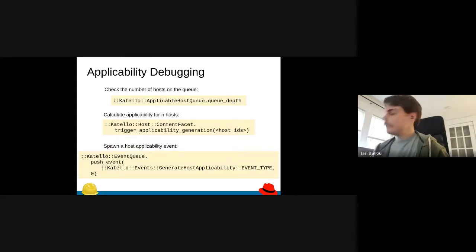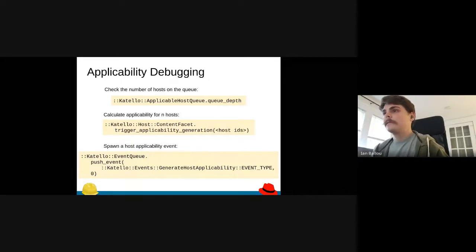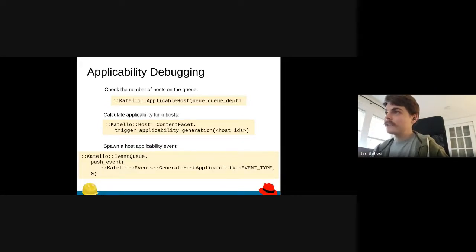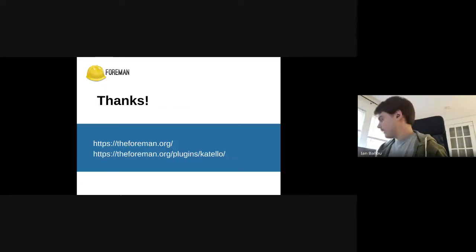Then I just have some debugging info that may be helpful. If you ever want to check the number of hosts on your queue, if you were questioning if they were being processed correctly, you could run this queue depth command from the console. You can also generate applicability for any number of hosts that you want by using this trigger applicability generation method with all your host IDs in the console. That will push it onto the queue and make the generate applicability event for you. If you also just need to try spawning like an applicability event by itself, this was helpful in the past when we were trying to figure out if the applicability events were even working because the queue had leftover hosts. You could just throw an event on there, let it run, and see that the host queue goes back to zero. That shouldn't be a problem anymore, but if it is, you have these options here to debug it. That is it. Let me know if you have any questions and thank you.